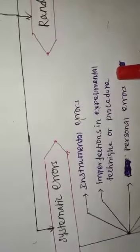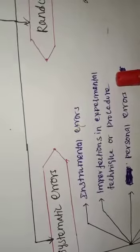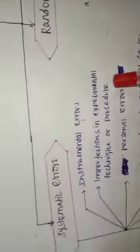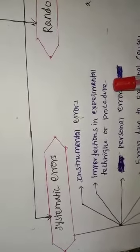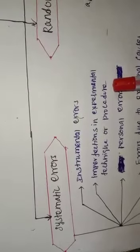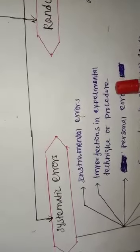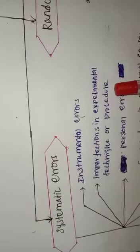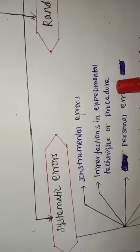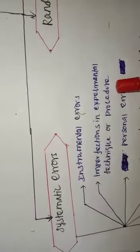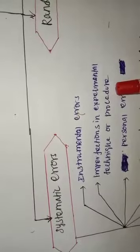The next type is imperfection in experimental technique or procedure. This error arises due to the experimental arrangement. For example, while performing an experiment with a calorimeter, if there is no proper insulation, there will be radiation losses, and the resulting error is called imperfection in experimental technique or procedure.